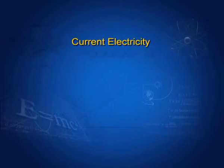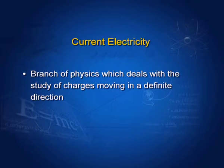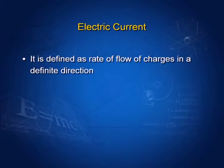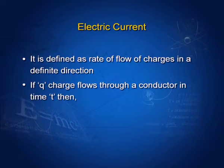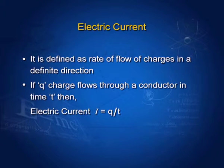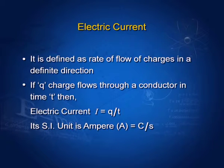Current Electricity is the branch of physics which deals with the study of charges moving in a definite direction. Electric current is defined as the rate of flow of charges in a definite direction. If Q charges flow through a conductor in time T, then electric current I equals Q upon T. Its SI unit is ampere, which is coulomb per second.